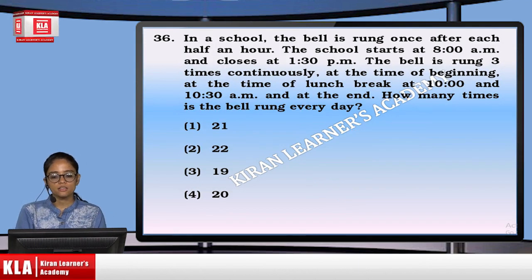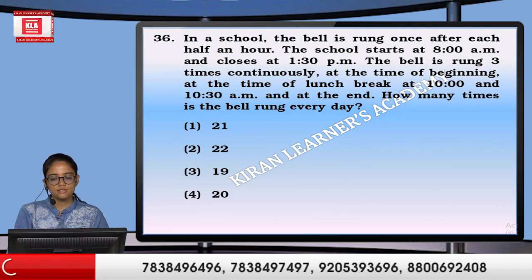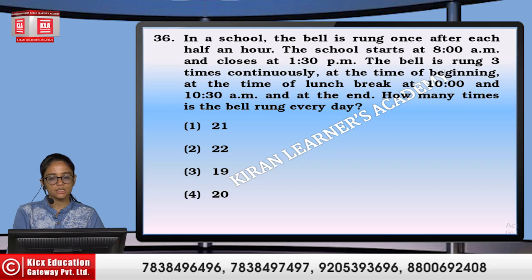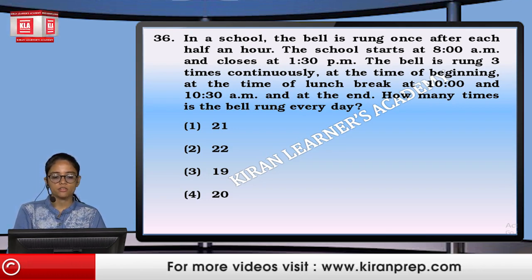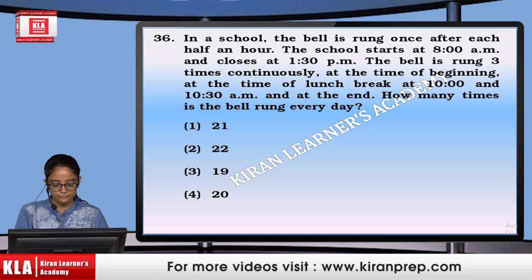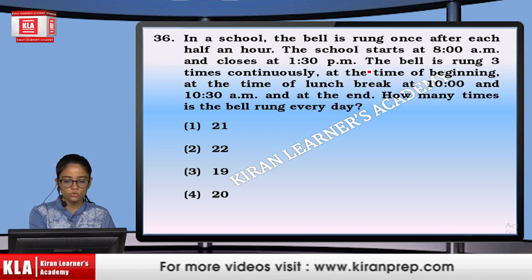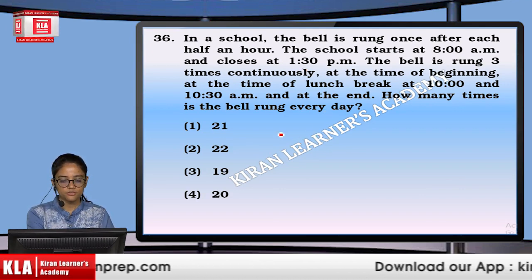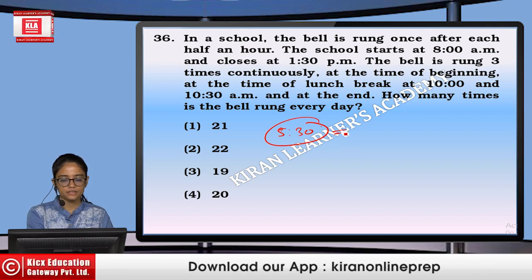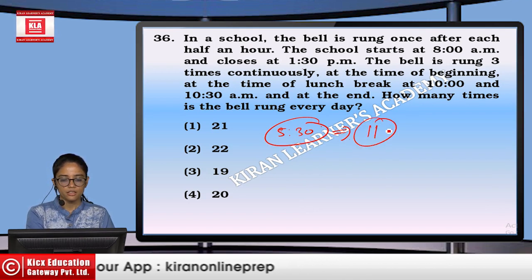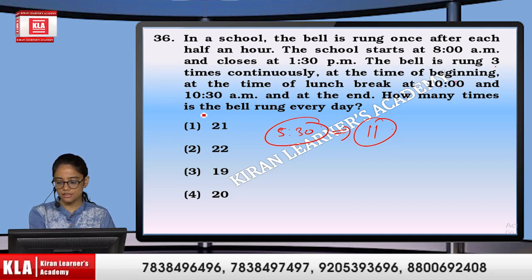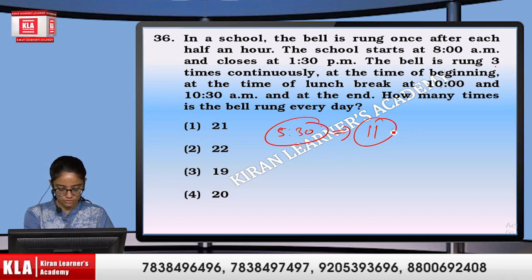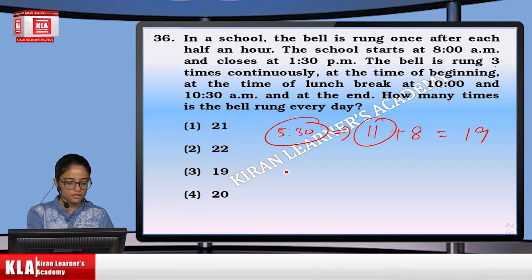In a school, the bell rings once every half hour. School starts at 8 and closes at 1:30 — a period of 5.5 hours, so the bell rings 11 times. Additionally, it rings 3 times continuously at the beginning and at lunch breaks at 10:30 and 12:30, adding 2 extra occasions of 3 rings each, contributing 8 extra rings. Total: 11 + 8 = 19 times. Option number 3.